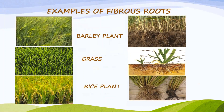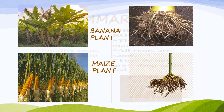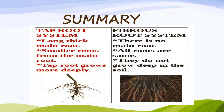Examples of fibrous root are: barley plant, grass, rice plant, banana plant, and maize plant. All these are examples of fibrous root.